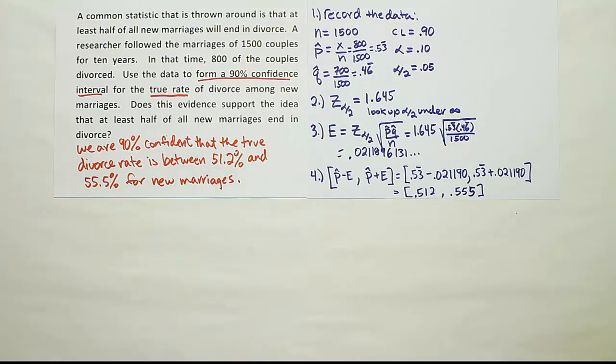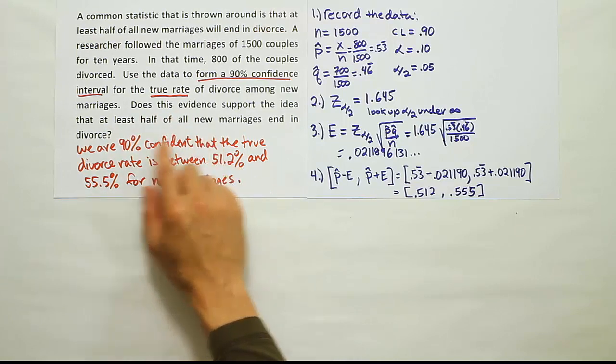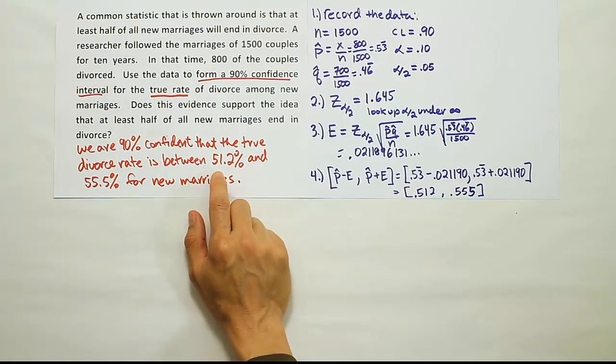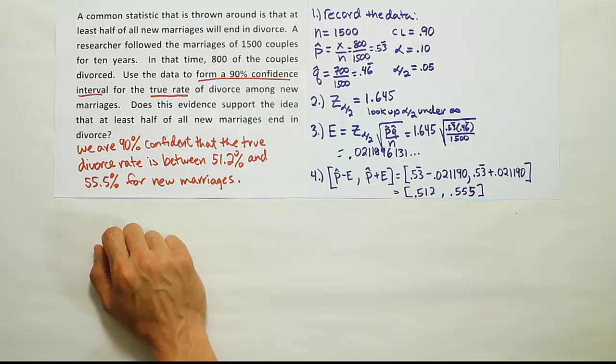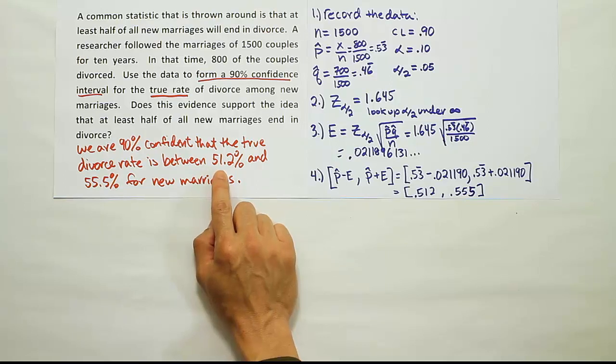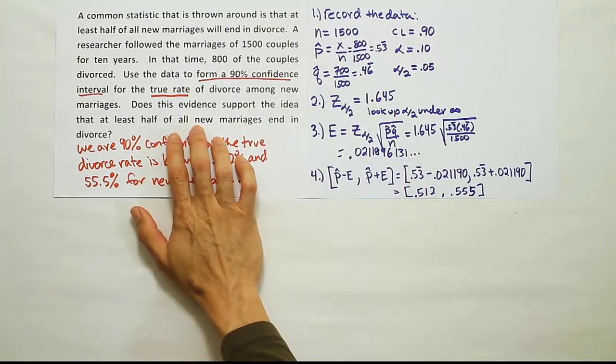So after looking at that statement, after writing it out, we want to answer the final question, which is, does this evidence support the idea that at least half of all new marriages end in divorce? And I think by looking at the interval numbers that we came up with, it does support that idea because these numbers, the lowest it says the divorce rate is, is 51.2% for new marriages. And it says that it could be as high as 55.5%. So essentially, either scenario or any number in between those two numbers covers the scenario that at least half the new marriages end in divorce. So at this point, we would say that this data sort of coincides with this belief.